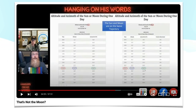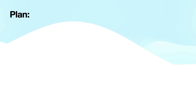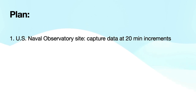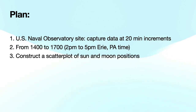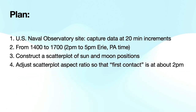Can we use the same U.S. Naval Observatory website to perform an analysis and figure out what's really going on? Here's the plan. We'll capture data from both the sun and the moon at 20-minute increments for the duration of the eclipse, as seen from Erie, Pennsylvania, from 2 p.m. to 5 p.m. Then we'll make a scatterplot for the azimuth on the x-axis and elevation on the y-axis, and then we'll adjust for first contact. To make things interesting, we'll do it all in real time using Google Sheets.